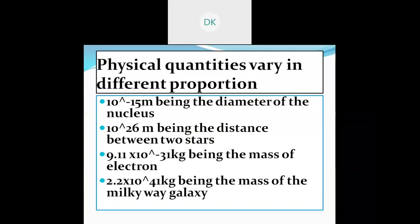Some physical quantities. All the physical quantities are not represented in the same unit prefix. It will vary depends on the quantities. See that, for example, 10 power minus 15 meter being the diameter of the nucleus. You know how nucleus is very small. The diameter is given negative values, it is a negative prefix. 10 power 26 meter being the distance between two stars.